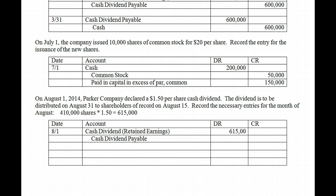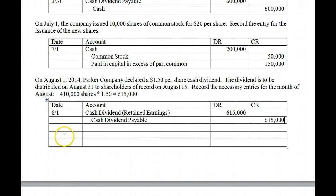So we record $615,000 for the August 1 declaration entry. August 15th is the date of record — we do nothing from a journal entry standpoint. Then on August 31, the date of distribution, we actually pay the dividend: debit Cash Dividends Payable $615,000 and credit Cash $615,000. That's all there is to a cash dividend — just be sure to always calculate outstanding shares properly.